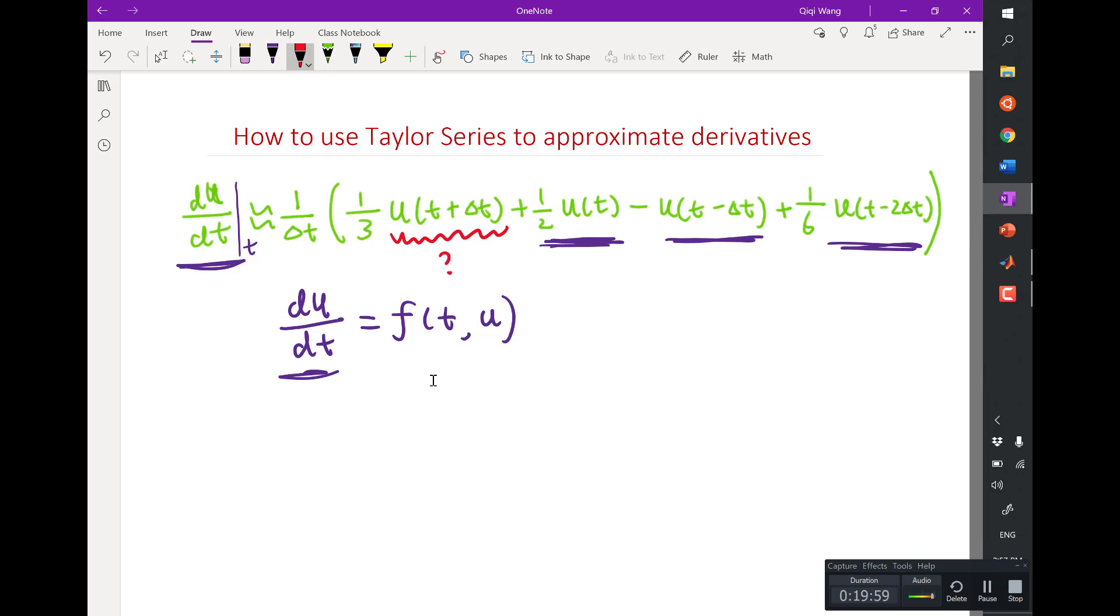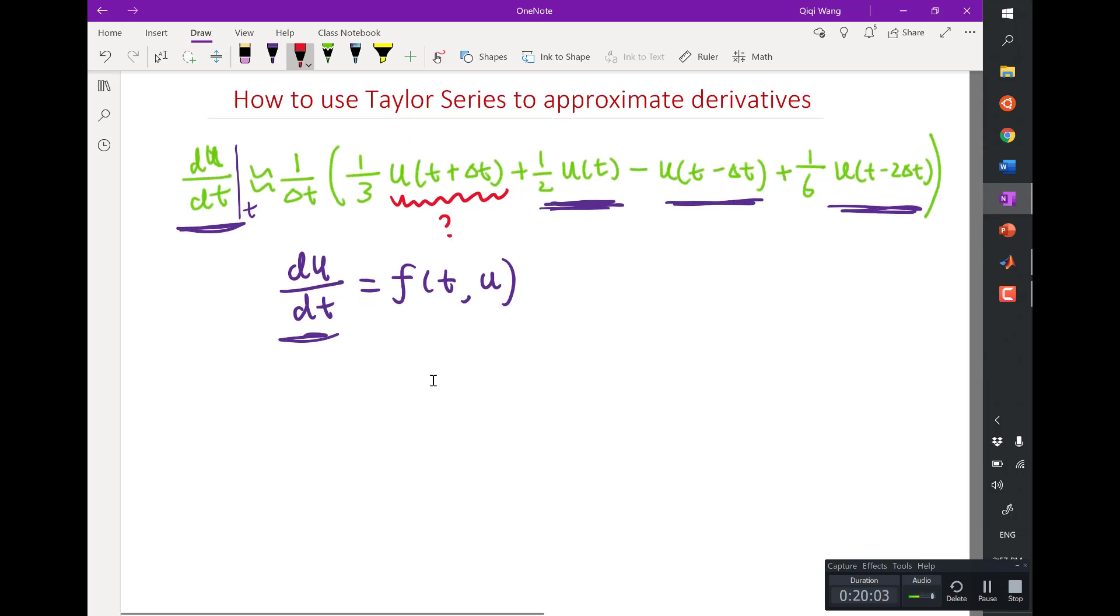So to turn this approximation into a scheme, I move the unknown to the left-hand side and all the known to the right-hand side. I would arrive u at t plus delta t would equal to what? I have to multiply everything by 3. In order to move things around.